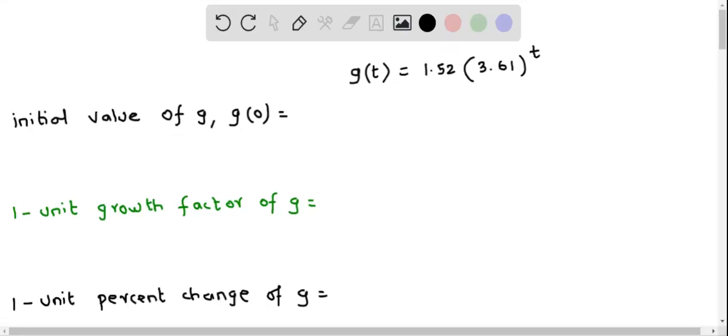Okay, here we have this exponential function g of t equals 1.52 times 3.61 raised to the power of t, and we answer these questions. First is the initial value of g, which is g of 0.